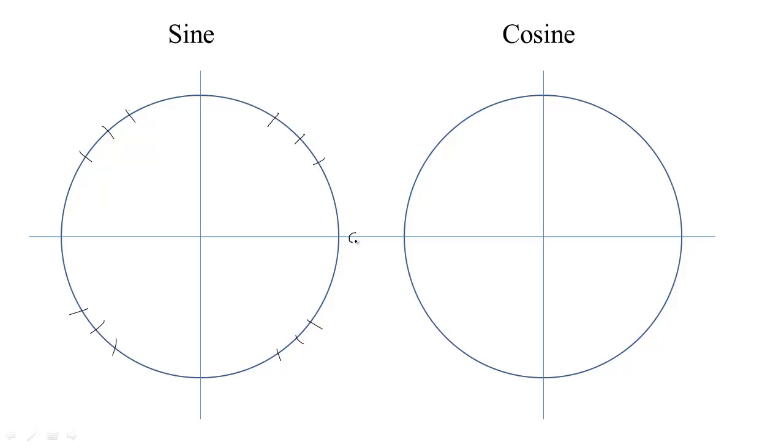Remember the sine measures the vertical distance, so here the sine has to be 0 and here it has to be 0 because you're not up or down. And then just count up 1, 2, 3, 4, back down 3, 2, 1.